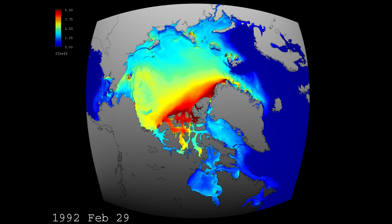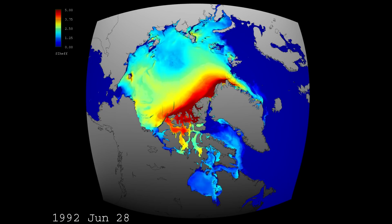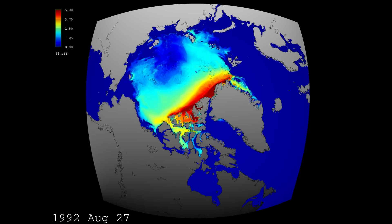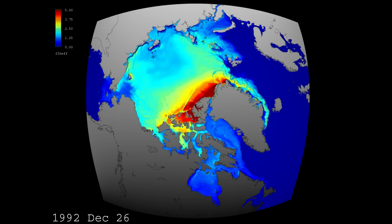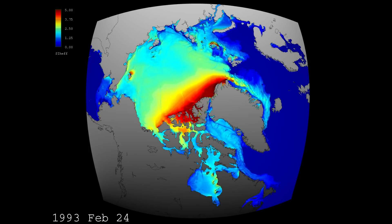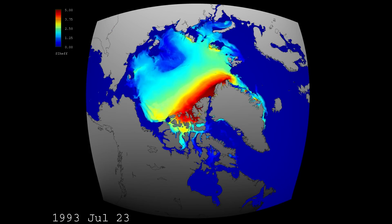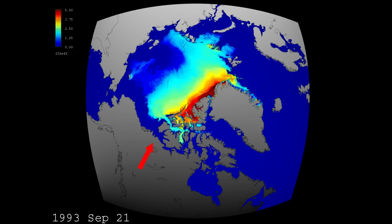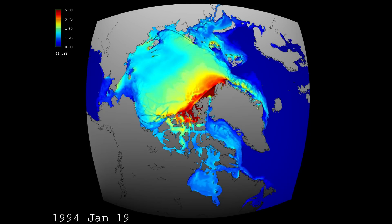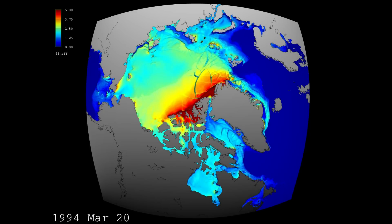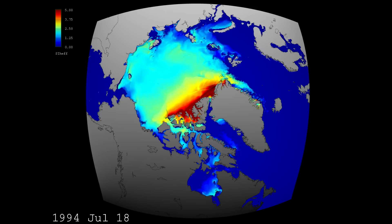This animation is an observation-constrained model simulation looking at effective ice thickness in the Arctic, and the simulation goes between 1992 and 2009. We're looking at the North Pole here, and an ocean that is enclosed on one side by Siberia and on the other side by Canada and Greenland. This part of the world gets very cold in the winter, and sea ice forms as the ocean surface freezes and ice forms on top of it.